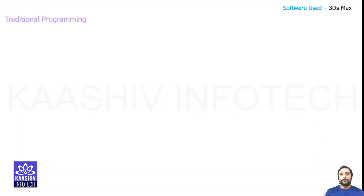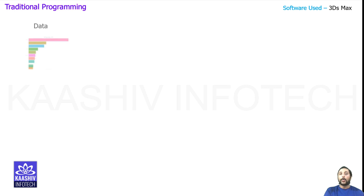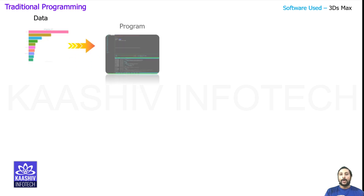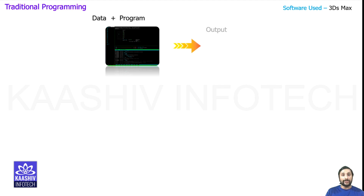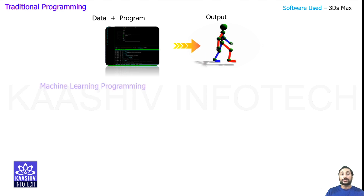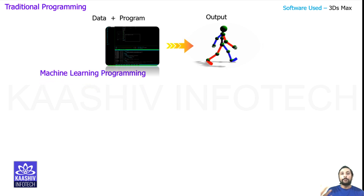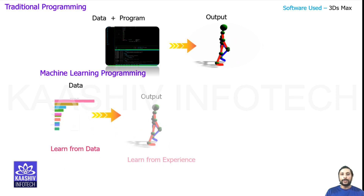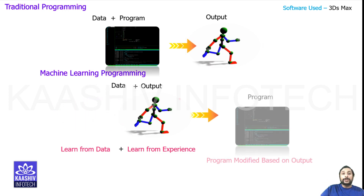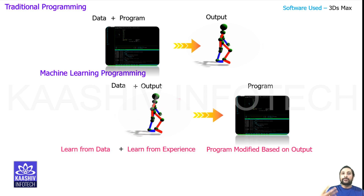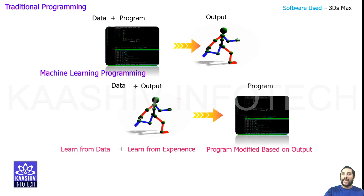In traditional programming, you have the data which is implemented in the program. This data is given as input to the program, and based on the input you get an output — that's how traditional programming works. In machine learning it's different, because we use learning methodologies to improvise the output and make the program think in an artificial intelligence manner. You have the data, and with experience you're able to determine what kind of program needs to be modified — that's how you train the machine.